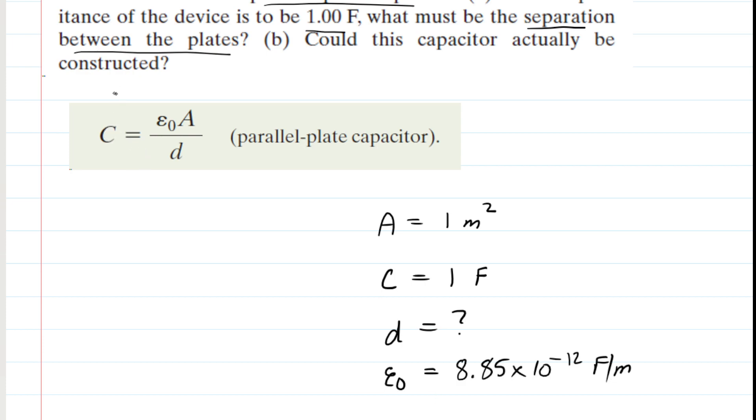We have listed here the relationship between capacitance, the area of the plate, and the plate separation. Since we're trying to solve for d, we're going to rearrange the equation. One quick trick here is to take the capacitance and d and just invert them or switch them. With that little switcheroo, we can go ahead and plug in the known values.